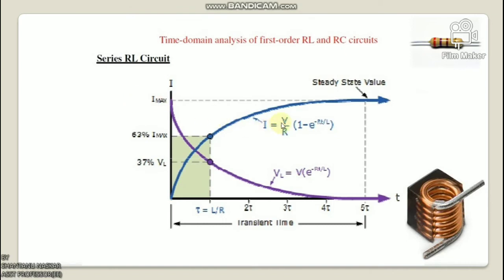The graph shows transient time versus current: at time tau, the loop current is at 37 percent and I is at 63 percent. This is the steady-state value. I(t) = (V/R)·(1 − e^(−Rt/L)) and V_L = V·e^(−Rt/L).